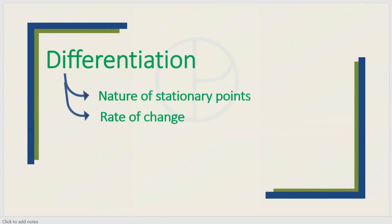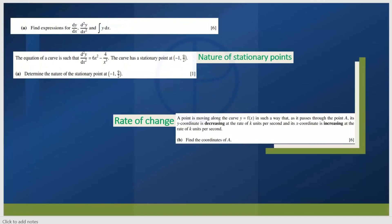Next is differentiation. Under differentiation, they will ask questions from nature of a stationary point and rate of change. From differentiation you will also get around a 6 to 8 mark question. Sometimes they will ask finding the gradient and forming the equation of a tangent, which is combined with coordinate geometry. Or simply they may ask to find the expression for dy/dx or d²y/dx².